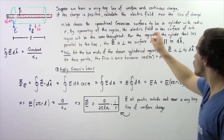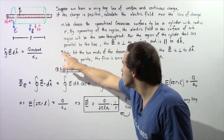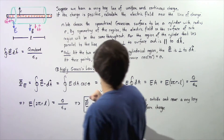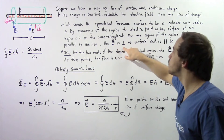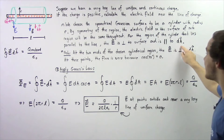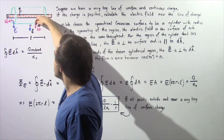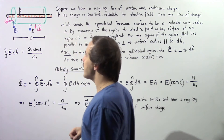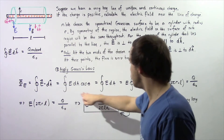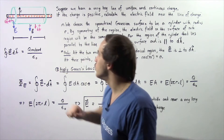For the region of the chosen cylinder that lies parallel to the line — on this side and on this side — E is perpendicular to the surface, and because dA is also perpendicular to the surface, they point in the same exact direction. The angle between them is zero, and that will become important when we apply this law.